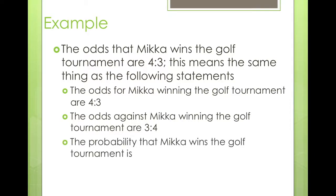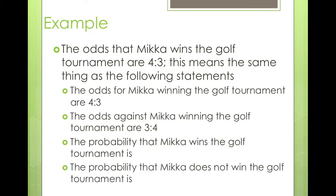The probability that Mika wins the golf tournament is four over seven, and the probability that Mika does not win is three over seven. These are left blank in your handout so that you can write them out and remember the distinction.